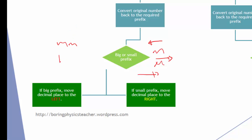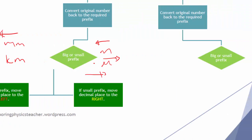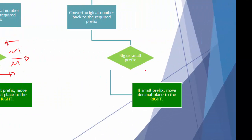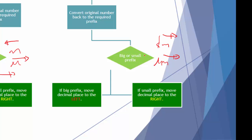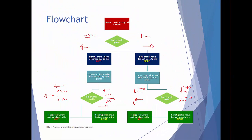For example, converting millimeters to kilometers requires moving left and then further left. If you have a small prefix as the target, you move the decimal right. So for kilometer as the source, you move right, and then converting into micrometers you move right again. But if converting to a big prefix like giga, you move towards the left. You can refer back to this flowchart during the lesson.